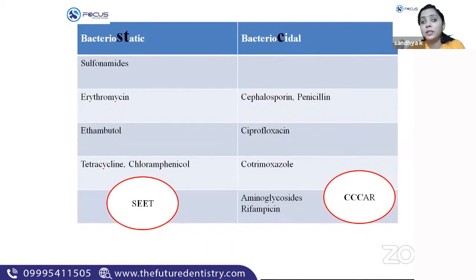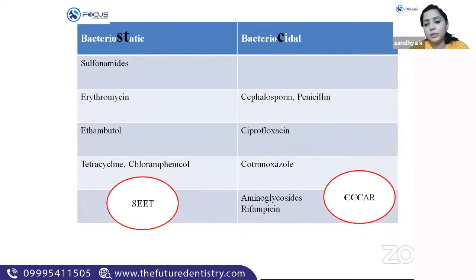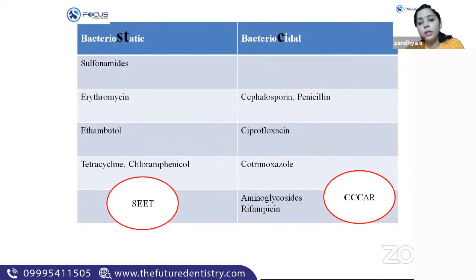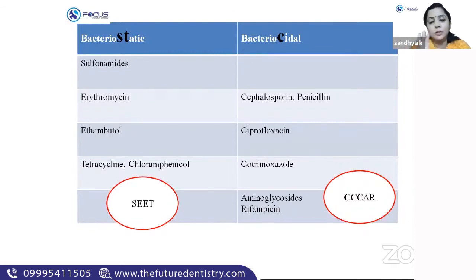For bactericidal agents, use the mnemonic CAR: cephalosporin, ciprofloxacin, co-trimoxazole, aminoglycosides, and rifampicin. Since cephalosporin is in that group, penicillin is also bactericidal. So SEET plus chloramphenicol are bacteriostatic, and CAR plus penicillin are bactericidal.